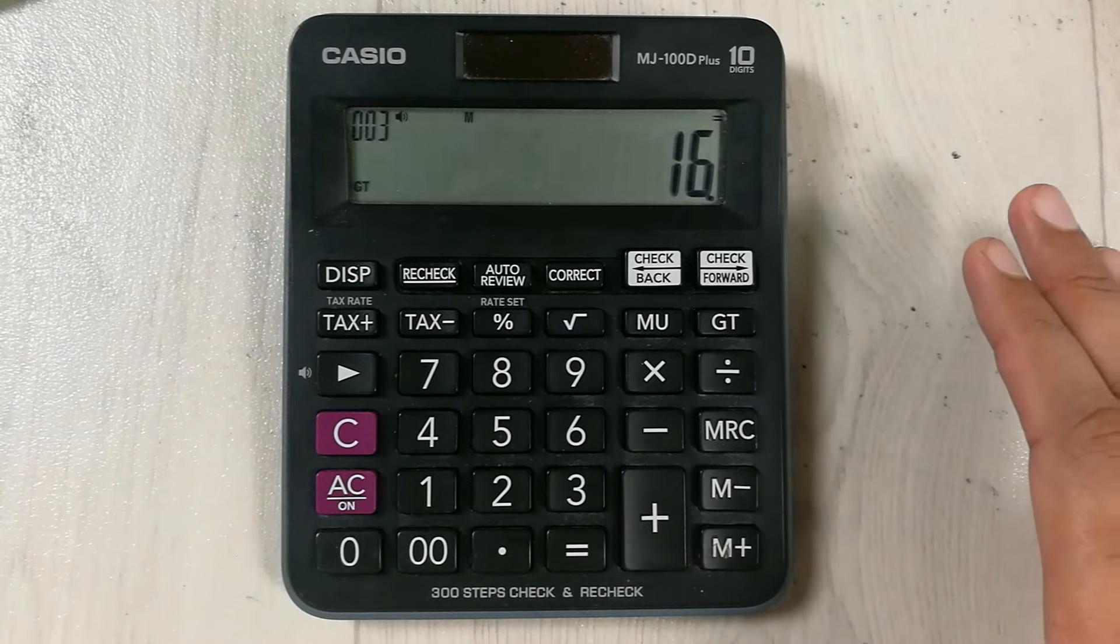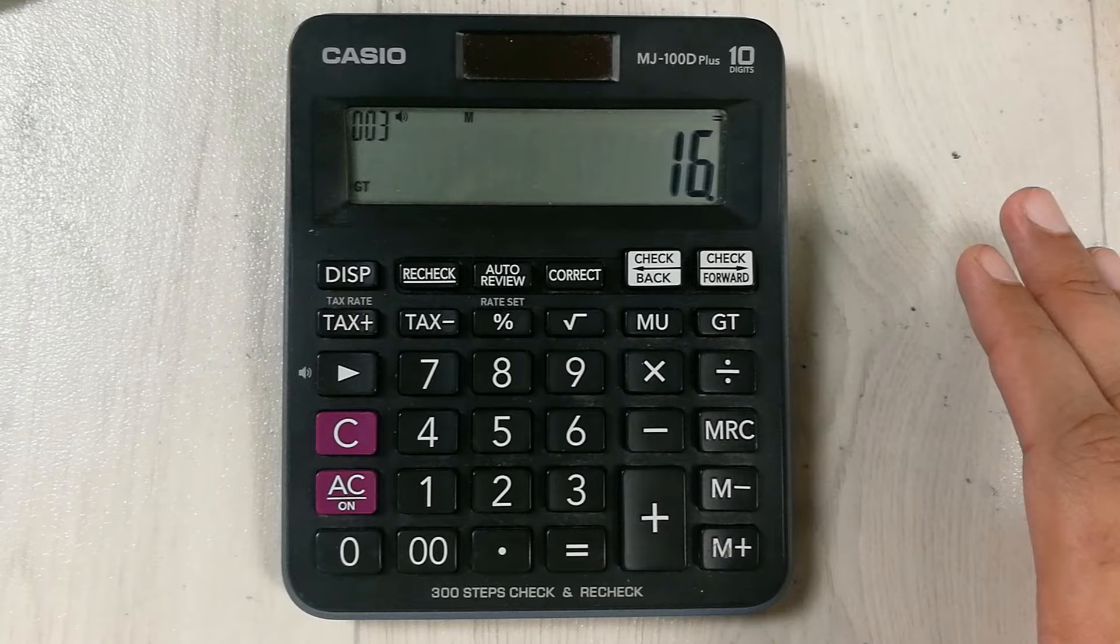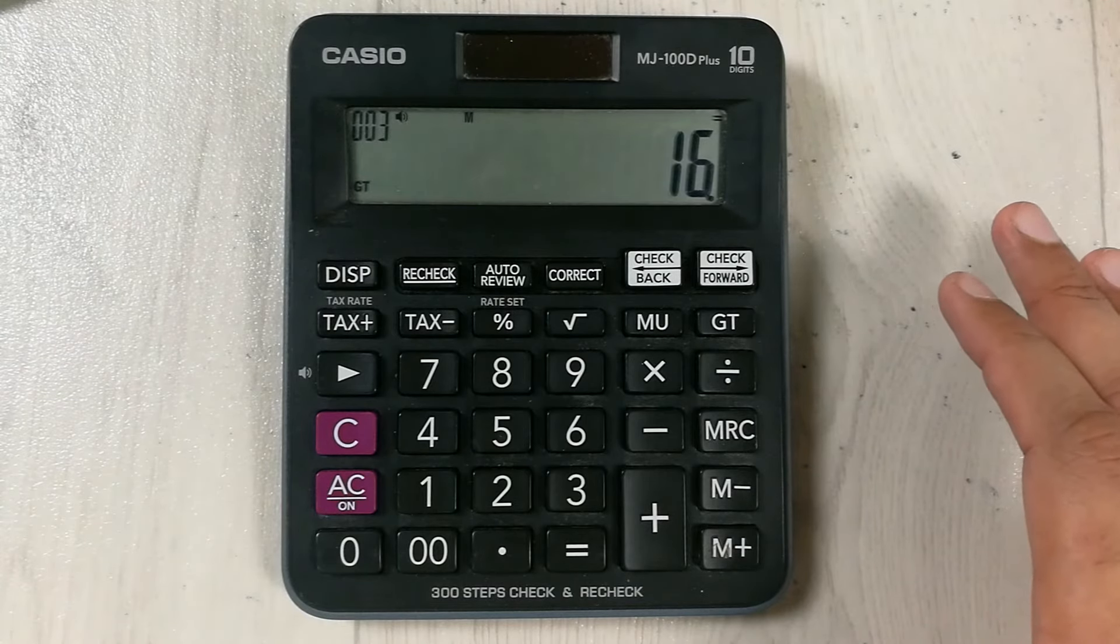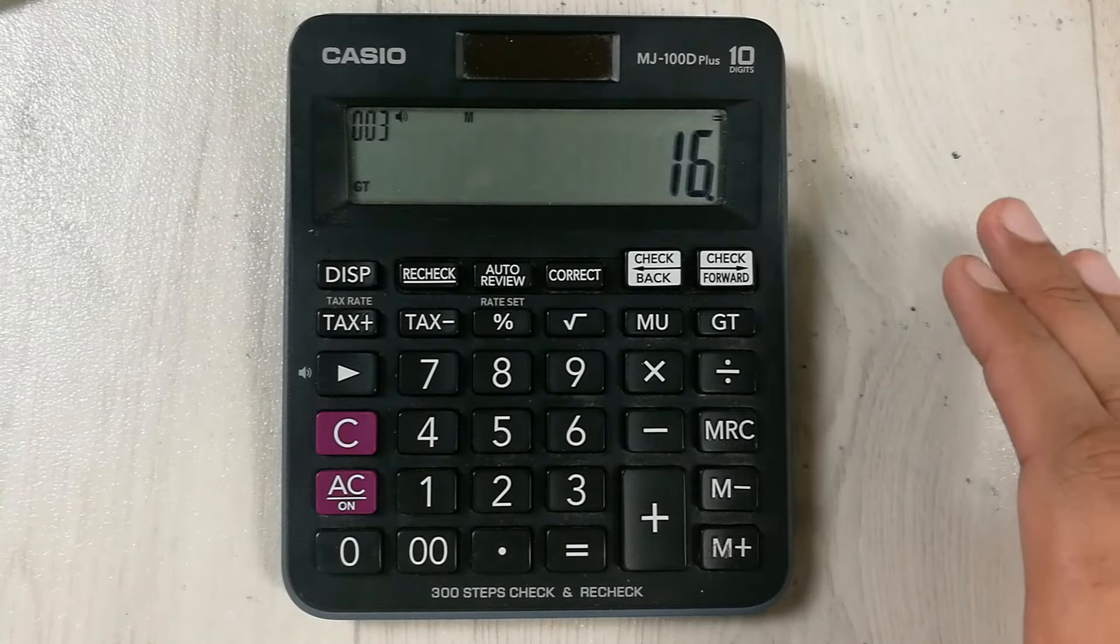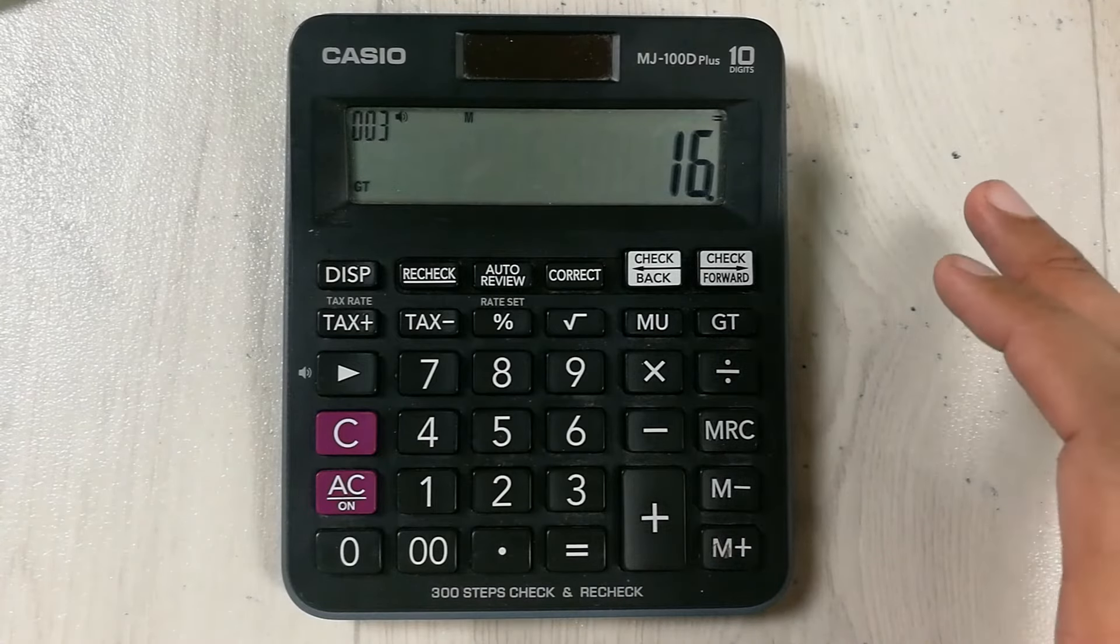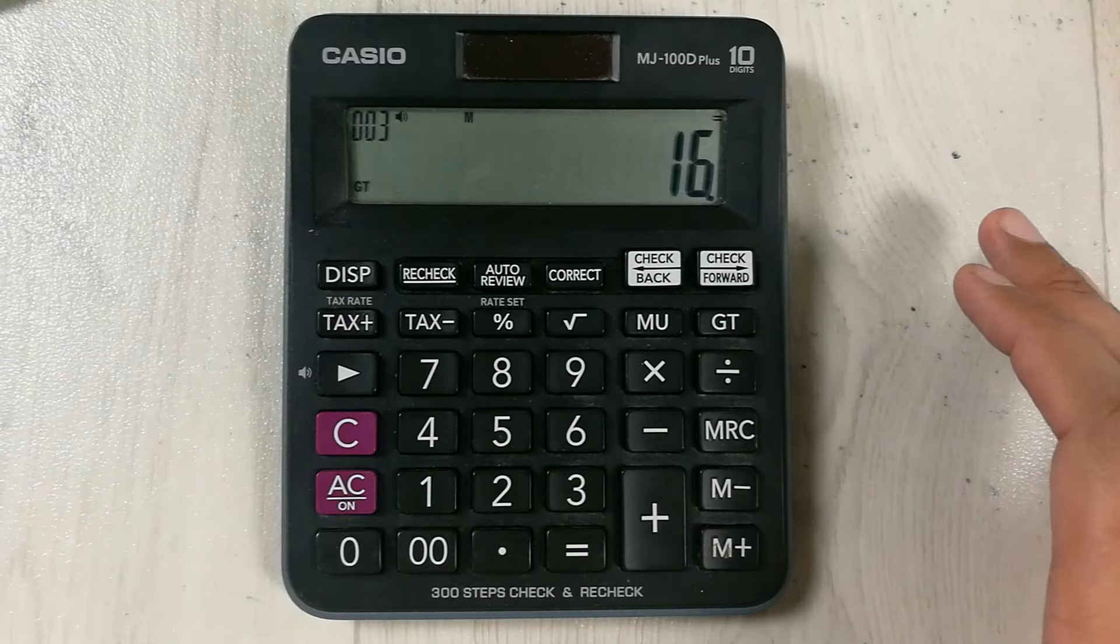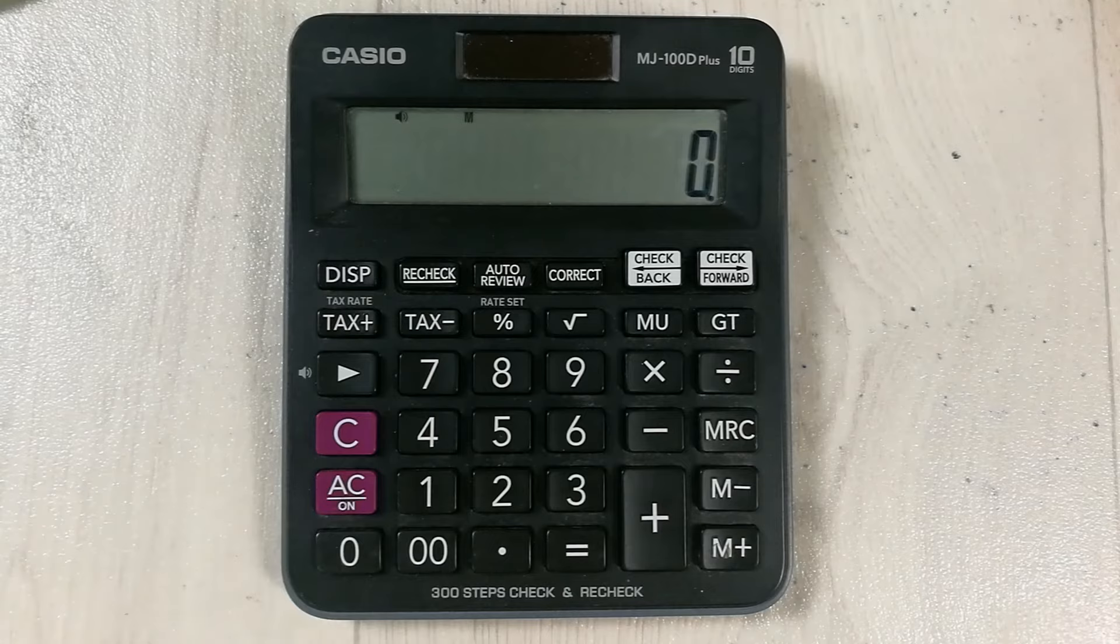So this is how you can calculate the sales per square foot on your calculator. You have to divide the total sales with the selling area. So let's move to another example.